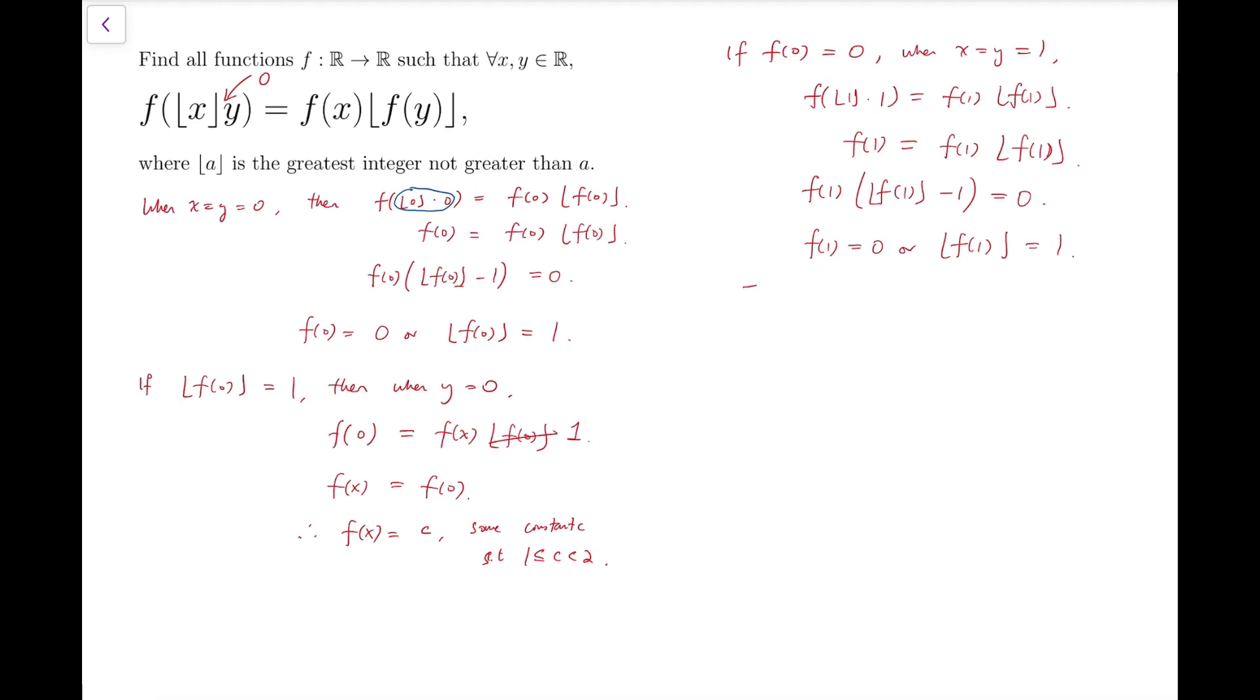Now we move into two sub cases. The first sub case is that if f of 1 equals 0, then we can just put x to be 1. So f of y equals f of 1 times the floor function of f of y. Now regardless of the value of y, this is 0. So f of y is simply 0.